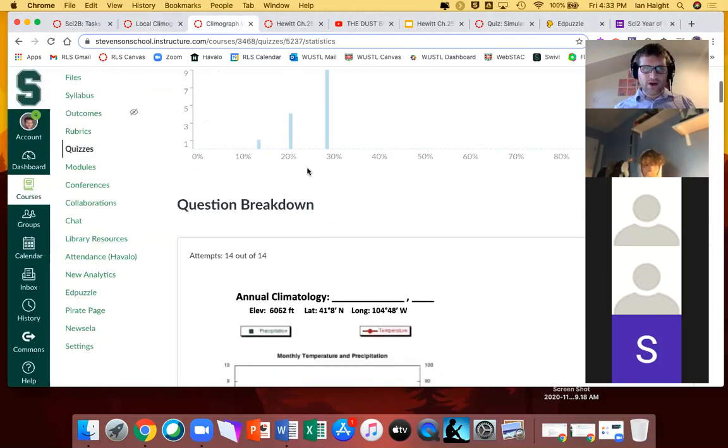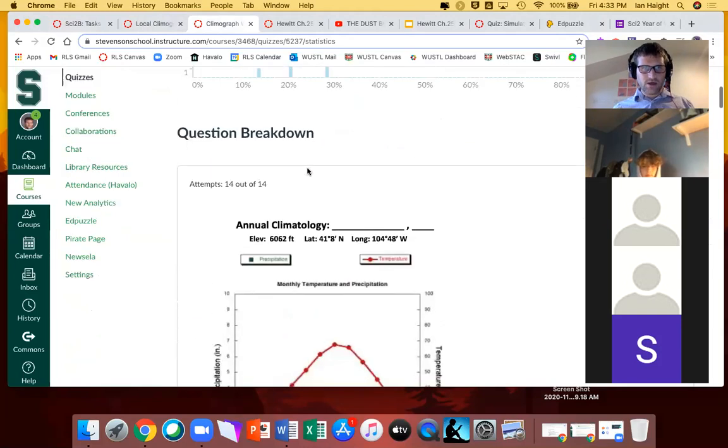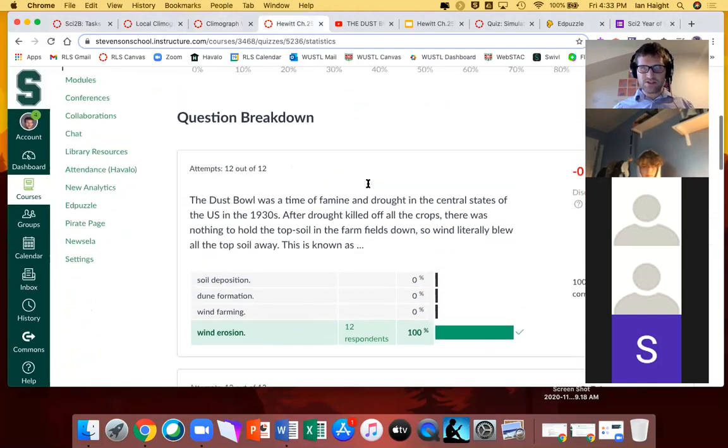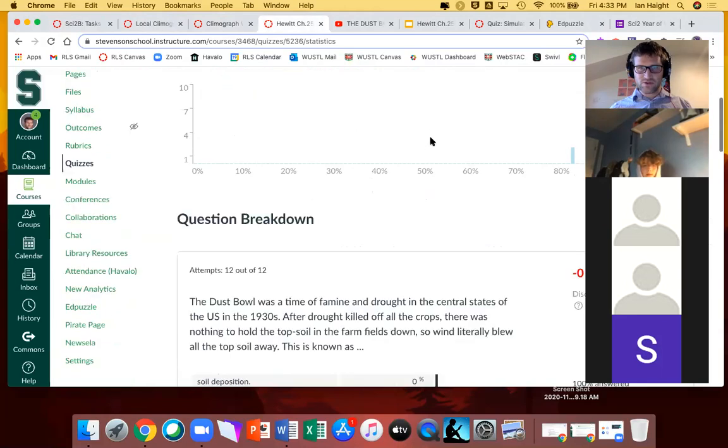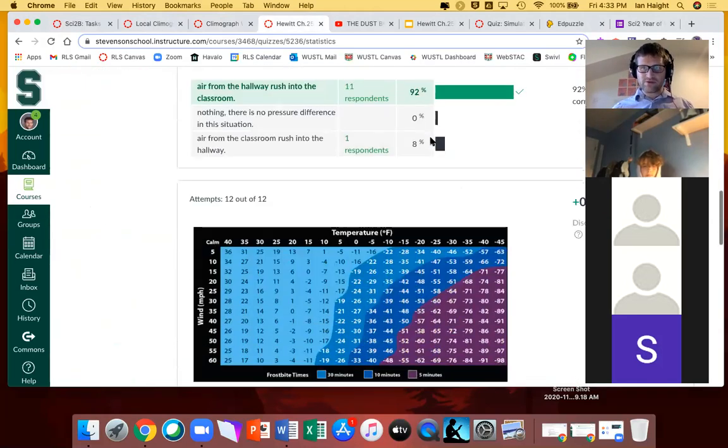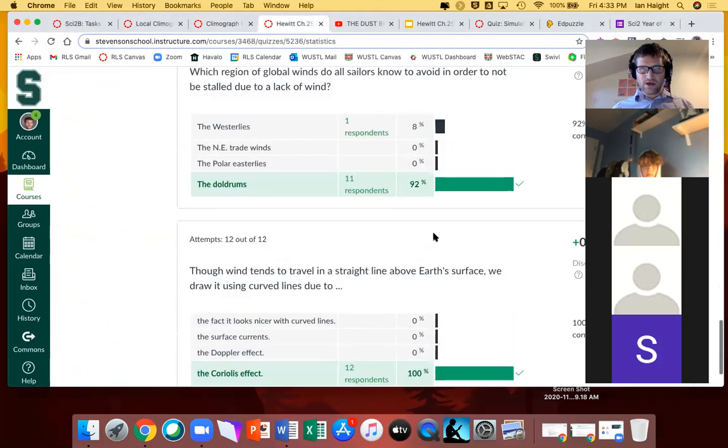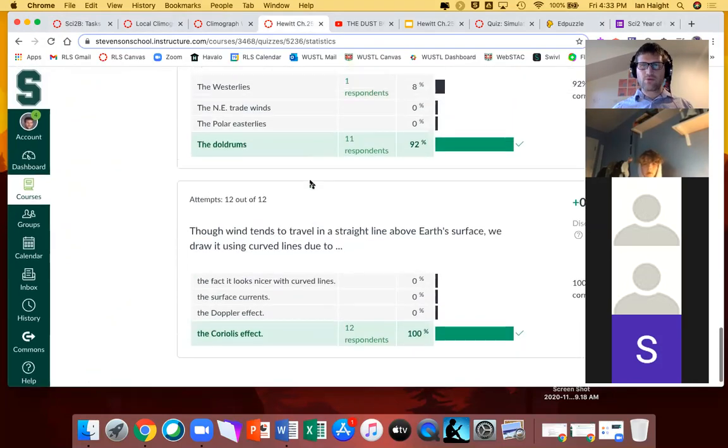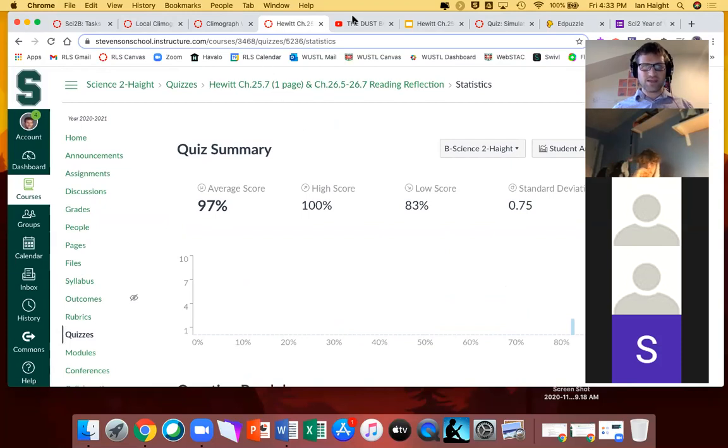You also had the climagraph part two, a little worksheet, again, looking at graphs, answering questions. I'm seeing 14 attempts, so that's looking good. For the Hewitt reflection, I'm only seeing 12, so if you haven't submitted this yet, please make sure to do so. But otherwise, of the people who have submitted it, it's looking great. All selected correct answers. If you did get any of the multiple choice wrong, remember you can take this multiple times and improve your score. You have up to 10 attempts to do that.